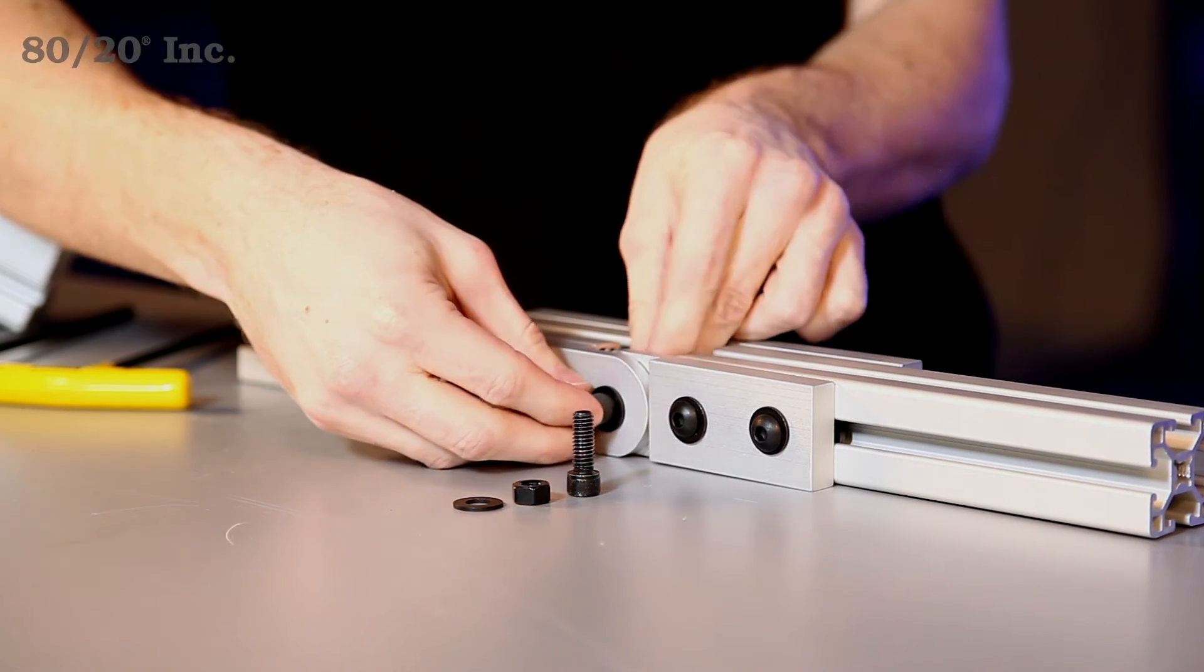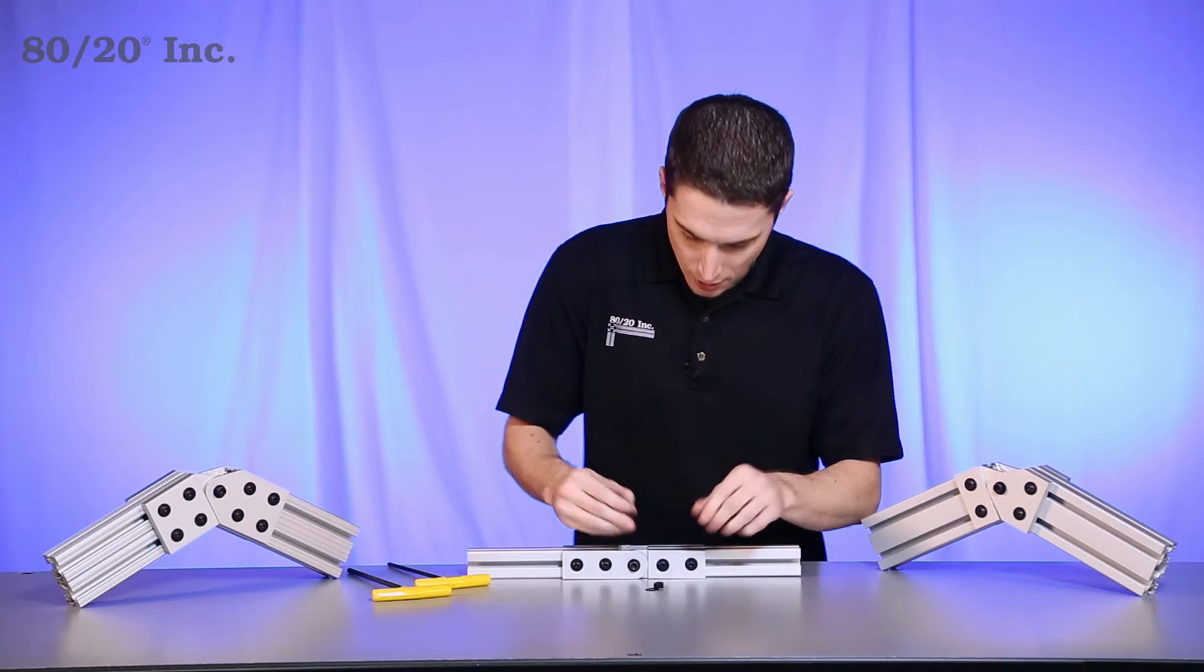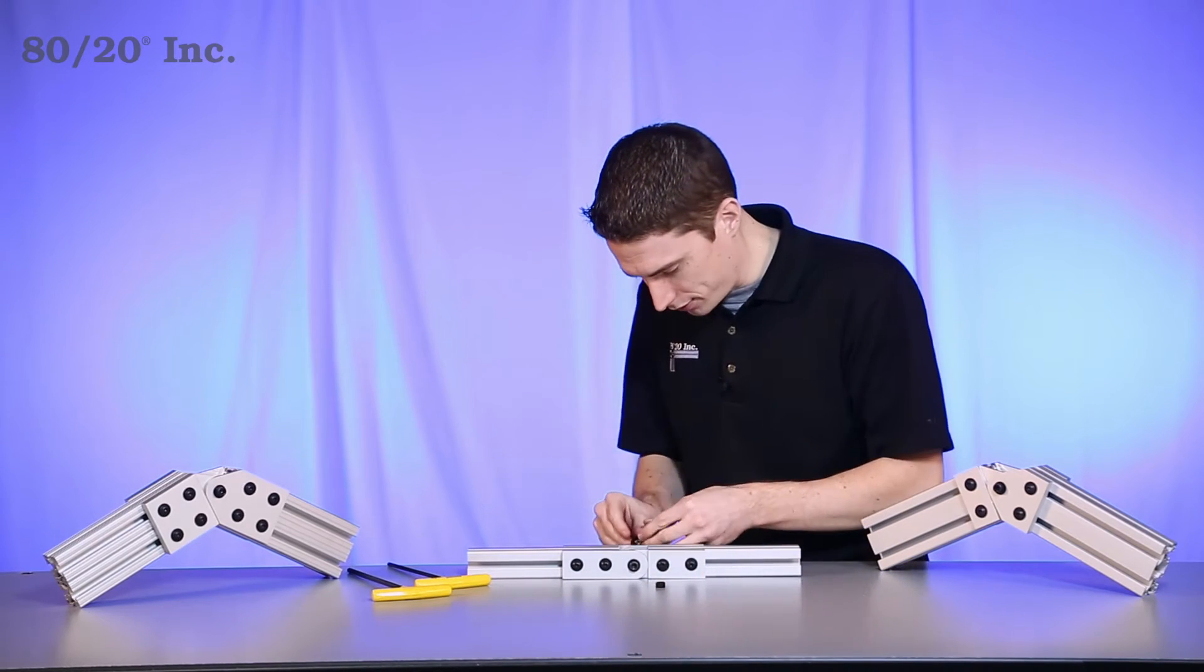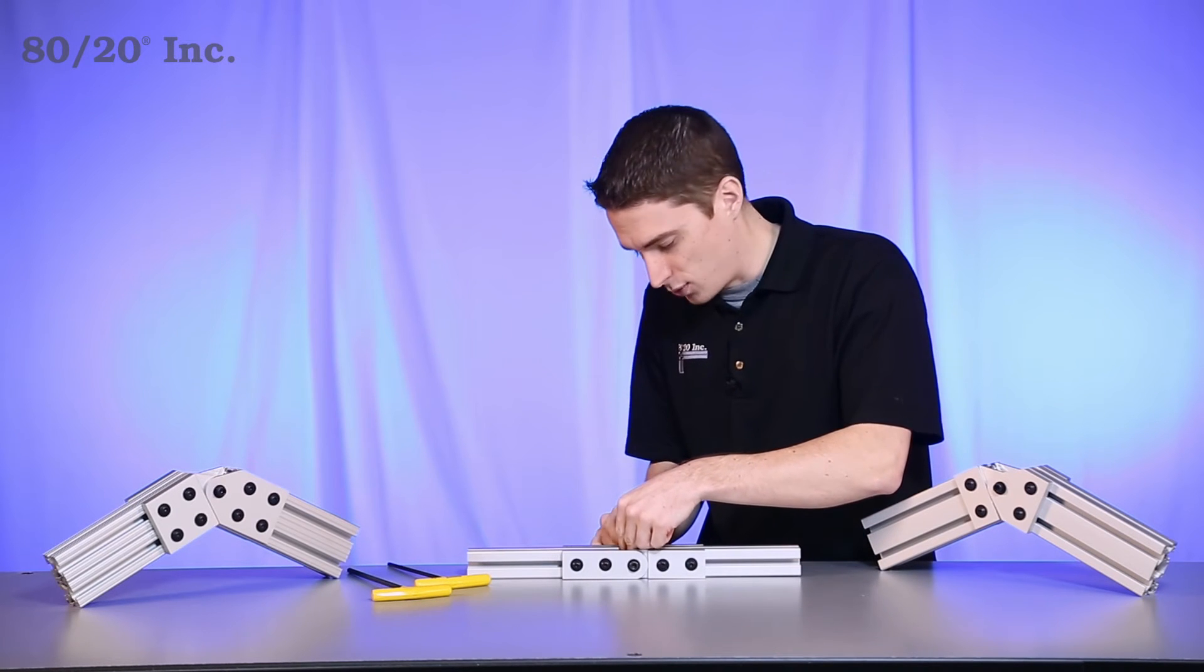We'll get that one on there with a hex nut. We'll hand-tighten it down and we'll do the same thing on the back. We'll get a bolt, feed it through, get a hex nut on it and hand-tighten it down as well.